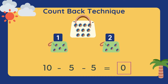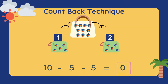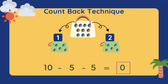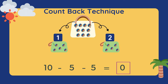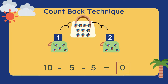To get the answer, we can use the count-back technique. As you can see, we start from 10, we minus 5 and we minus again with 5. This indicates that 10 marbles are separated into 5s.